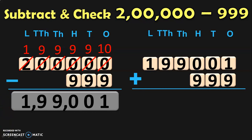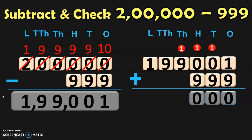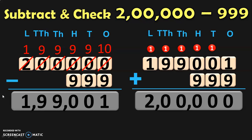To verify this subtraction is correct, we add this answer with the smaller number 999. Write down the numbers and their place values and begin the addition from the ones place. 1 plus 9 is 10: retain 0, carry 1. 1 plus 0 plus 9 in the tens place is 10: retain 0, carry 1. 1 plus 0 plus 9 in the hundreds place is 10: retain 0, carry 1. 1 plus 9 in the thousands place is 10: retain 0, carry 1. 1 plus 9 in the 10 thousands place is 10: retain 0, carry 1. 1 plus 1 in the lakhs place gives 2. So the answer when you add 1,99,001 plus 999 is 2 lakhs, which is the bigger number from which you began your subtraction.